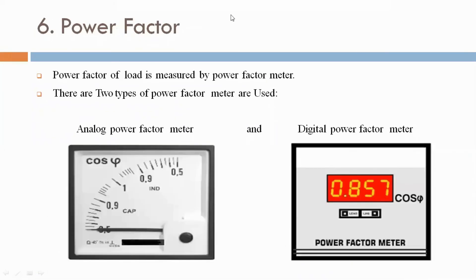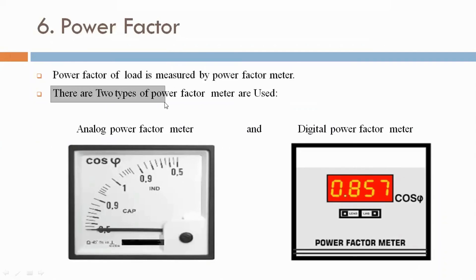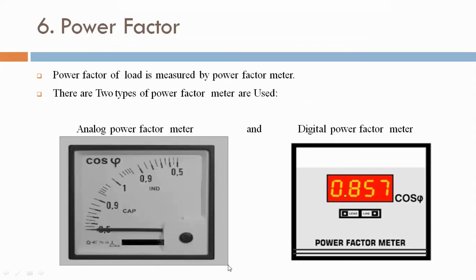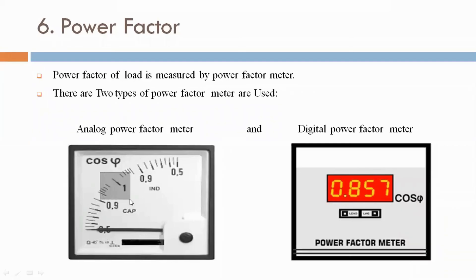Now we are discussing power factor. The power factor of a load is measured by a power factor meter. There are two types: analog power factor meter and digital power factor meter. The maximum range is one. Lagging and leading indications are shown. The unit of power factor is cos phi.